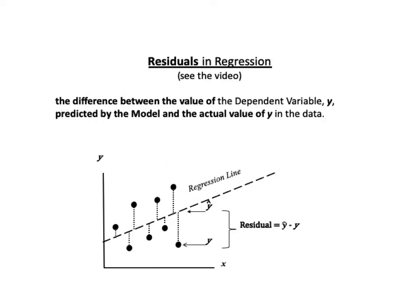In a regression model, for any value of the independent variable X, the residual is the difference between the value of the dependent variable Y predicted by the model and the actual value of Y in the data. In this illustration, the length of the vertical dotted line to each point is the value of the residual for that point — the difference between the point and the regression line. The discipline of design of experiments can help refine a regression model and reduce the size of the residuals.